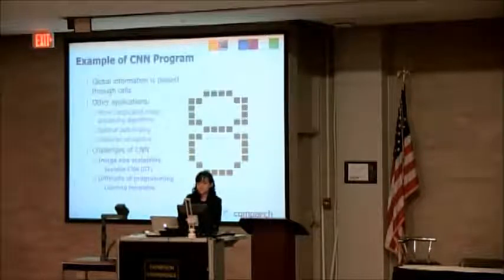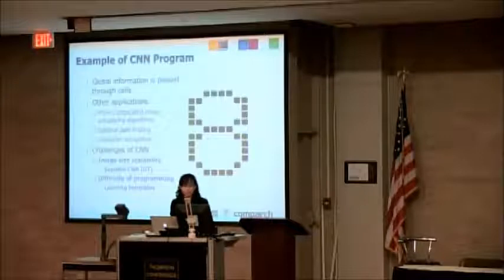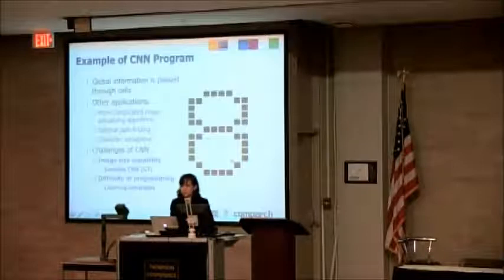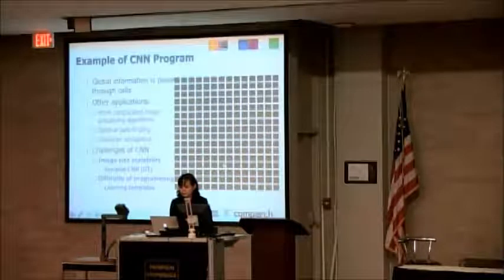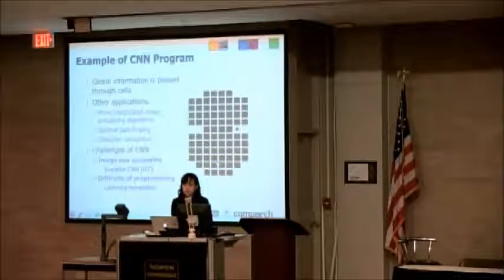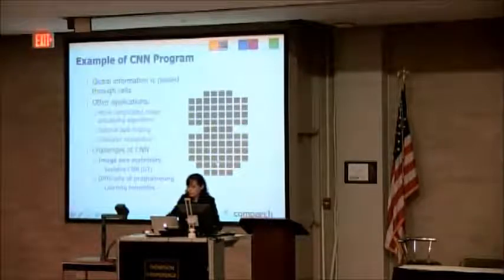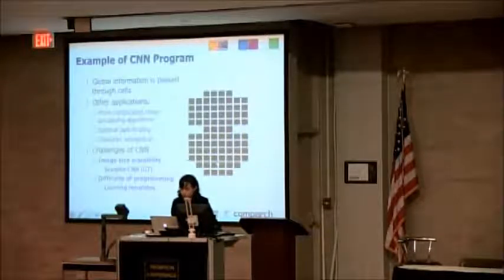The examples of what we can do with CNN processors go beyond image processing — we can do more complicated processing algorithms, or use it for optimal path finding or character recognition. Even though CNN cells are only connected to neighbors, information can actually be passed through these CNN cells. One good example is finding holes in a character. In order to find the holes, we need to know each pixel's relative location to all other cells — that is, global information. It starts with everything thinking it's a hole, but then propagates boundary information and eventually finds the hole correctly.